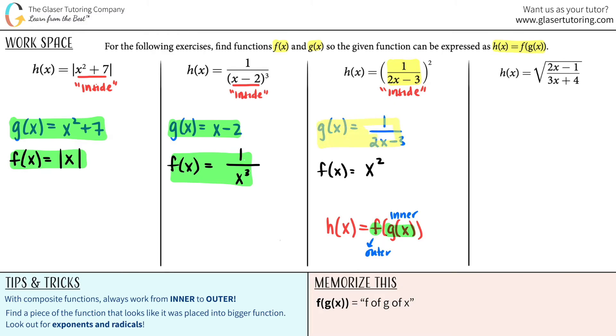Last one. We're doing these so fast. I'm so proud of you. We are doing great. H of x equals the square root of 2x minus 1 all over 3x plus 4. Is there anything that is trapped inside? Parentheses, square roots, cubed roots. It looks like this whole thing is being trapped underneath a square root. You see how this whole thing is being trapped underneath the square root. So that whole thing has to be the inside.